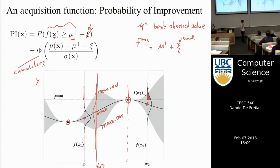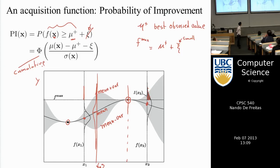A student asks: can we just explore different values of mu-plus if we don't know the best? To clarify: in this case we have explored two points, drilled two holes, and the hole that gave the most oil is mu-plus. Mu-plus is the best observed value — say 20 gallons from the better of the two holes drilled.